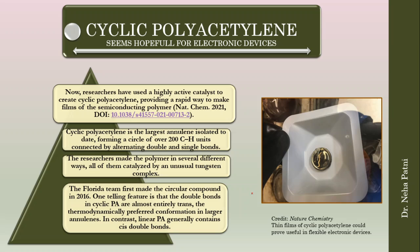In brief, many of today's flexible electronic devices have been developed using the first synthesis of linear polyacetylene in 1958. Now this paper is talking about cyclic polyacetylene, which seems very hopeful for electronic devices. They have actually used a highly active catalyst to create cyclic polyacetylene, and it becomes a semiconducting polymer.